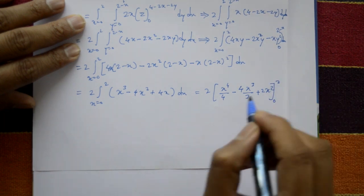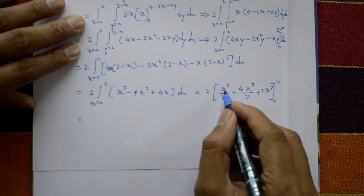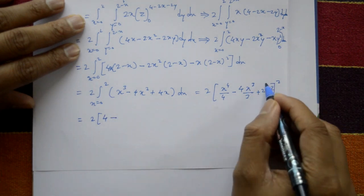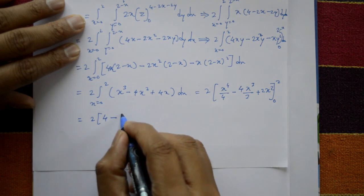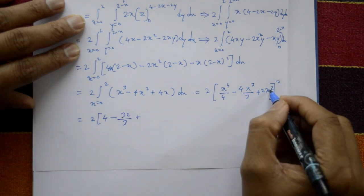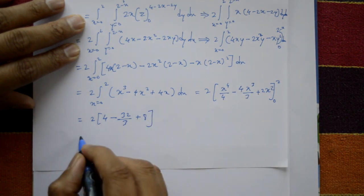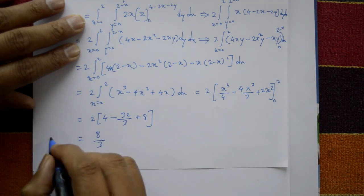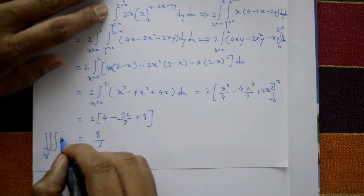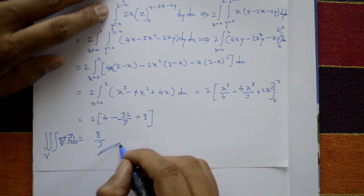Putting x = 2: 2⁴ = 16, so 16/4 = 4; minus 4·(2³)/3 = 32/3; plus 4·(2²)/2 = 8. Lower limit x = 0 gives 0. Simplifying: 2·(4 - 32/3 + 8) = 2·(12 - 32/3) = 2·(4/3) gives the answer 8/3. Therefore the integral of del·F dv = 8/3.